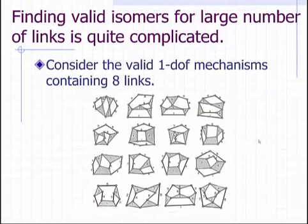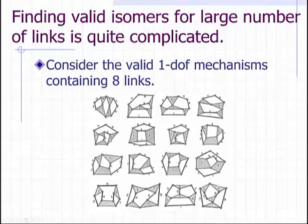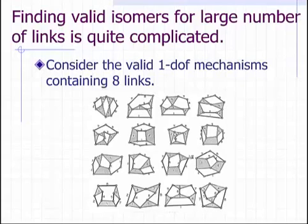Finding valid isomers for a large number of links is quite complicated. Consider the valid one-degree-of-freedom mechanisms that contain eight links. Like the Stevenson and Watt six-bar mechanisms, many have binary and ternary links, but some also have quaternary links. As we increase the number of links, we could have higher-order links such as pentagonal or hexagonal links. How many valid isomers exist as we increase the number of available links remains an open research question. That concludes our discussion on isomers.